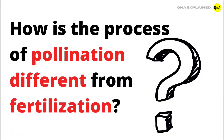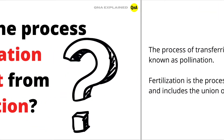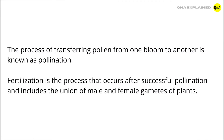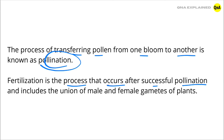How is the process of pollination different from fertilization? The process of transferring pollen from one bloom to another is known as pollination. Fertilization is the process that occurs after successful pollination and includes the union of male and female gametes of plants.